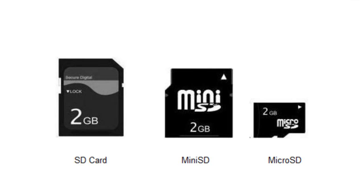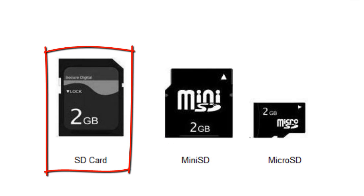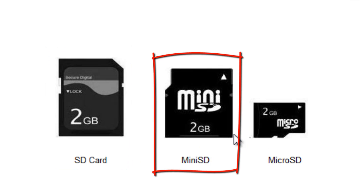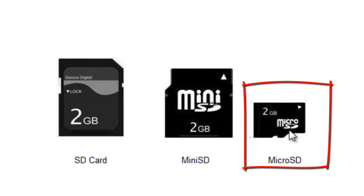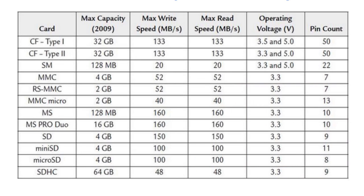SD cards are based on MMC, and in terms of functionality they are the same, except that the SD card has an optional encryption feature. The SD cards are physically thicker than MMC and will not fit into the MMC slot, but the MMC can easily be inserted into the SD card slot. SD cards are also available in three different sizes: the normal SD card, the mini SD card, and the micro SD card.